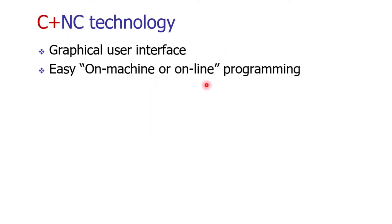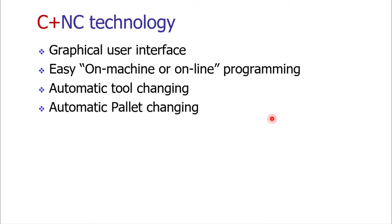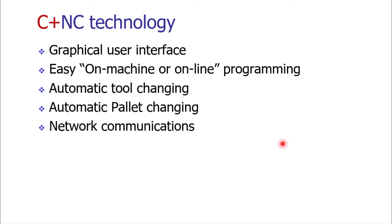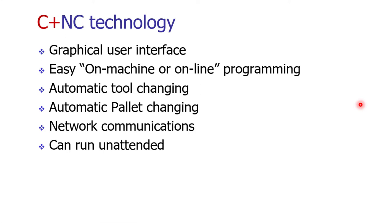With computers, online programming became easy. Tools can be automatically changed, and there is a facility for pallet changing. Computers also enabled a single computer to communicate with and control a variety of machine tools—called DNC, direct numerical control. With computers, machine tools can run unattended: once the program is uploaded and controlling operations, no human intervention is needed.